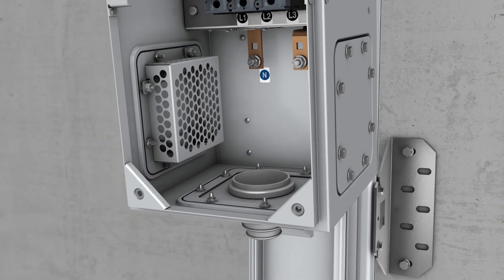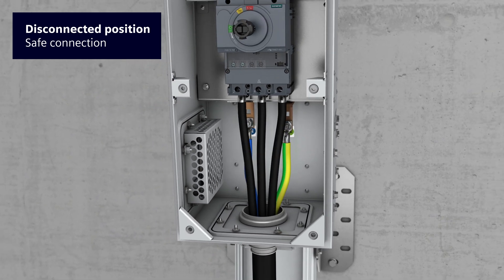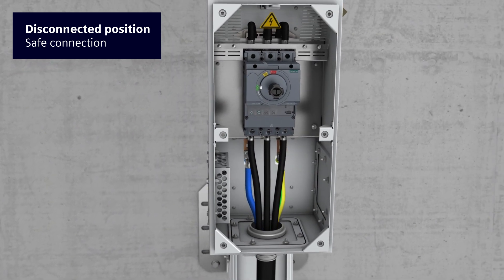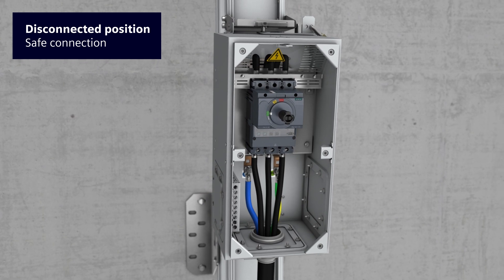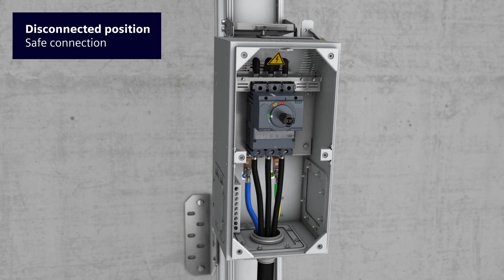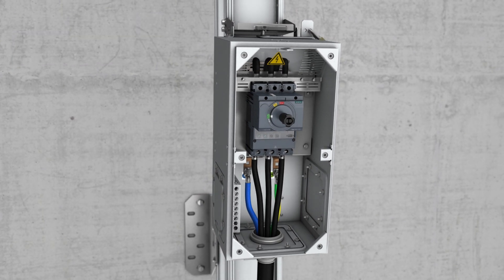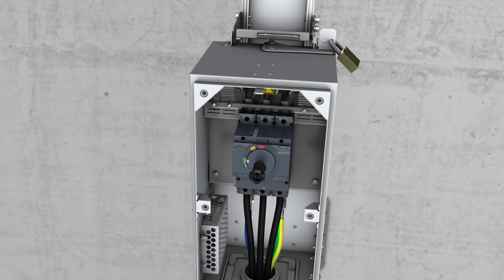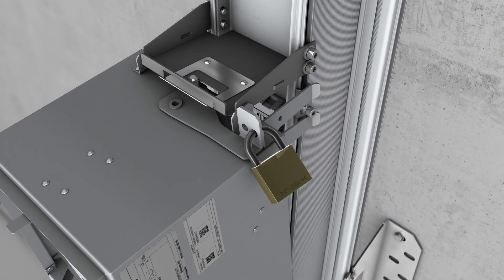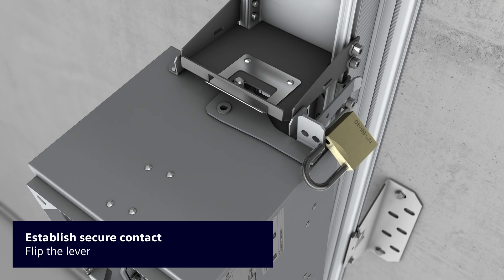The electric connection of the consumer to the tap-off unit can now be carried out safely by simply connecting the consumer cables. Electric contact between the tap-off unit and the busbar system must not be established before all cable connections have been completed and secured.